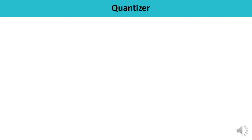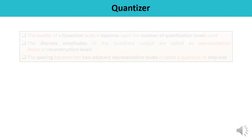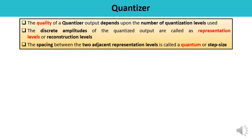Now let us talk about the quantizer — what it is and its purpose. The quality of quantizer output depends upon the number of quantization levels used. The discrete amplitude values of the quantized output are known as representation levels or reconstruction levels. The spacing between two adjacent representation levels is known as a quantum or step size — a commonly used term defined as the spacing between two reconstruction levels.